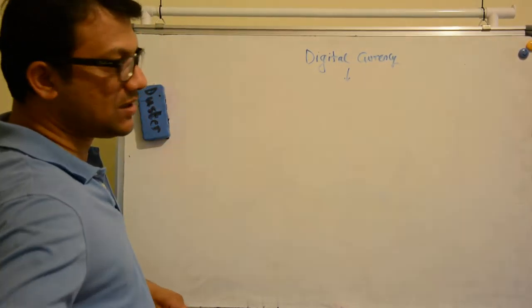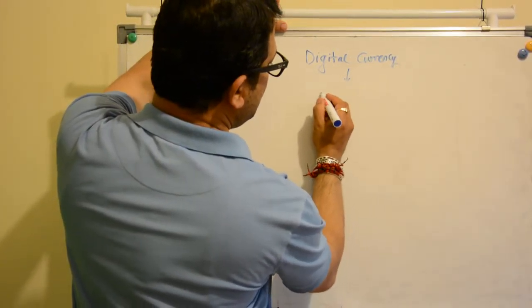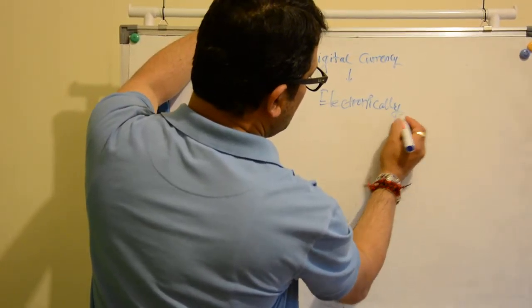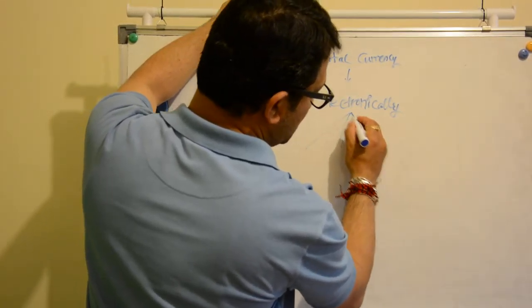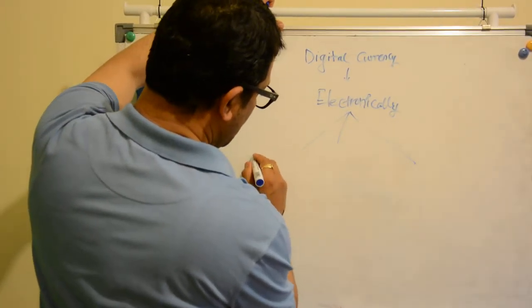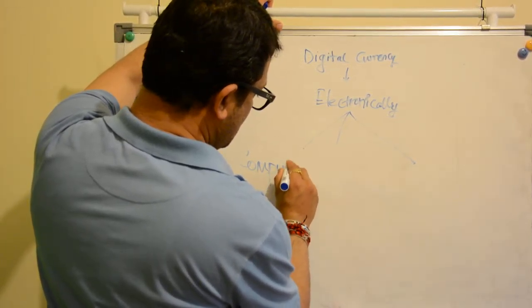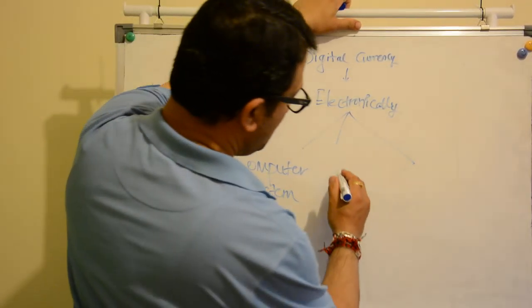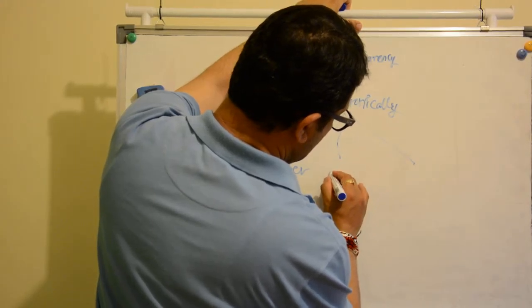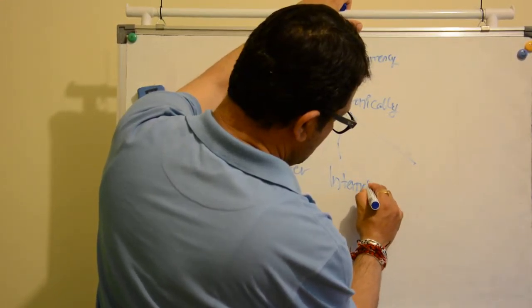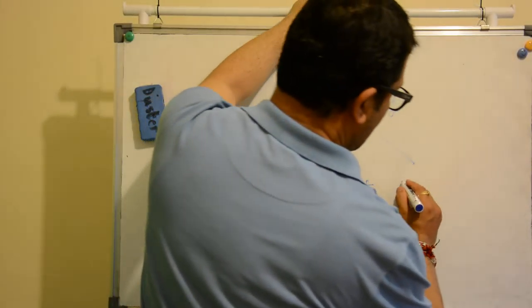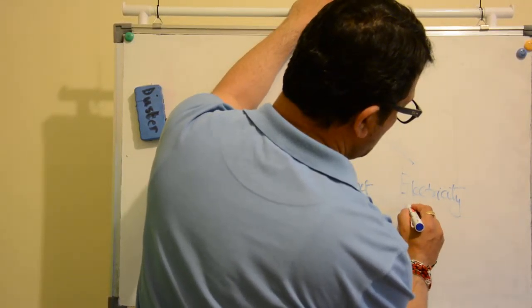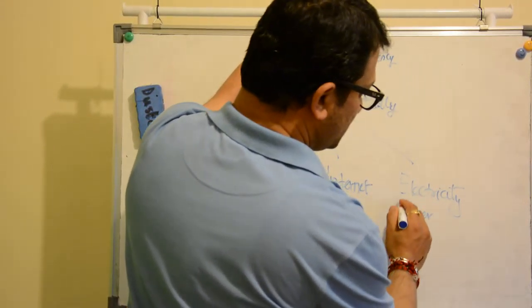Now digital currency is generated electronically which uses three things: one is a computer system, which uses internet, and which uses a continuous flow of electricity or power as we say.